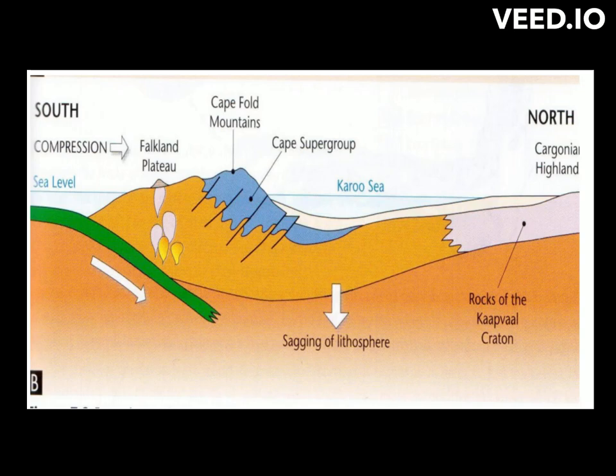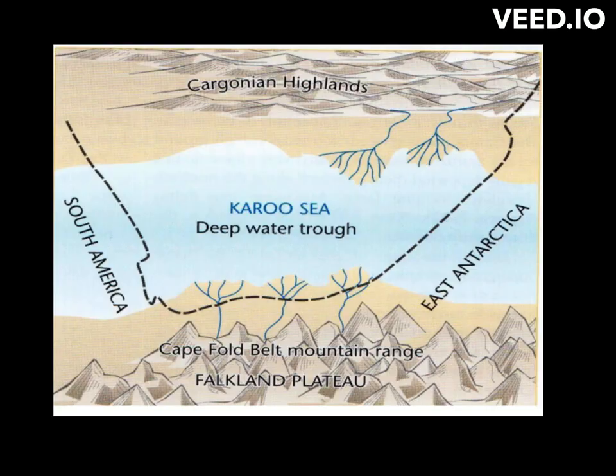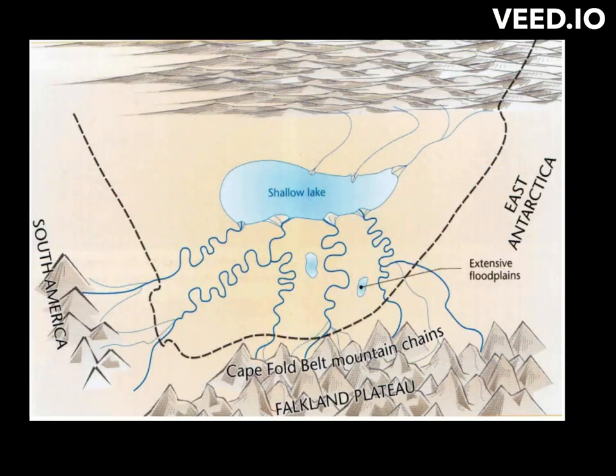At the end of the Ecca times, the Cape Mountains in the south continued to rise, providing a major source of sediment for the Karoo Sea. The highlands to the north became more eroded and eventually became covered with sediment as the Karoo Sea silted up, resulting in the Karoo Sea eventually shrinking to a lake, marking the boundary with the Beaufort Group.